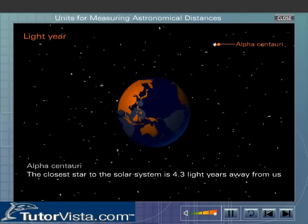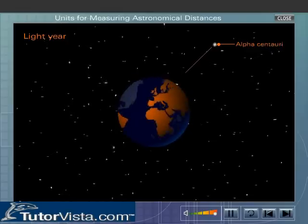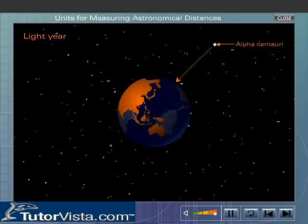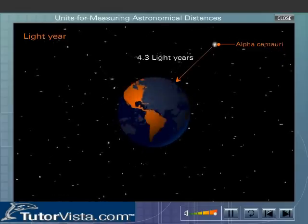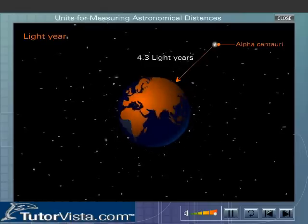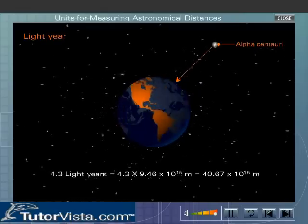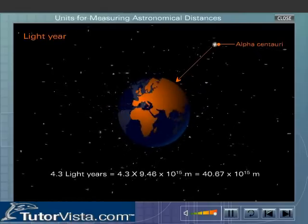That is, the light from Alpha Centauri, the closest star to the solar system, takes 4.3 years to reach the Earth. This distance is equal to 4.3 into 9.46 into 10 to the power 15 metres.